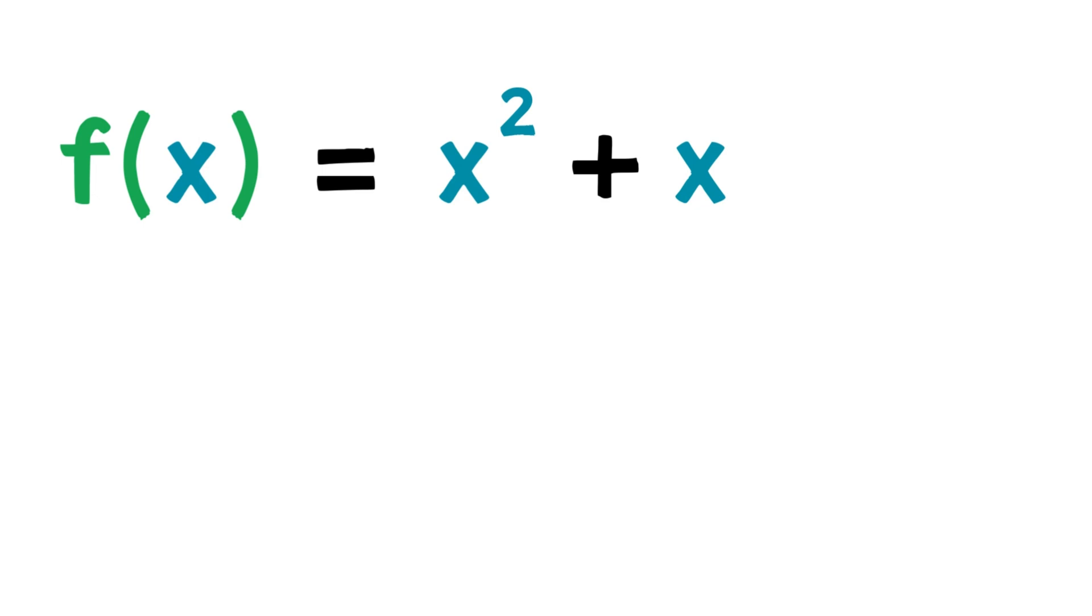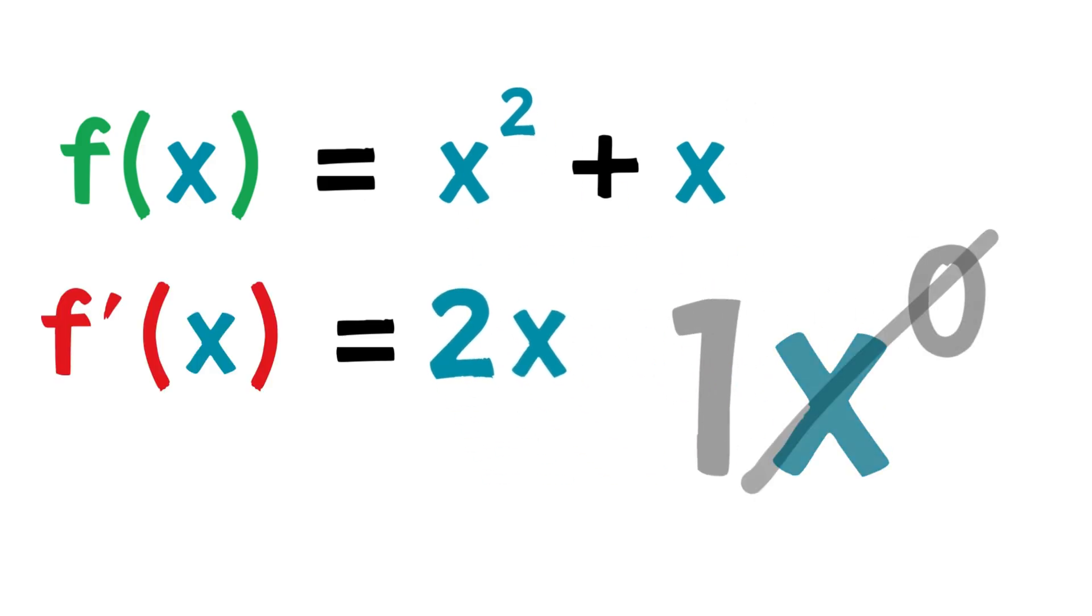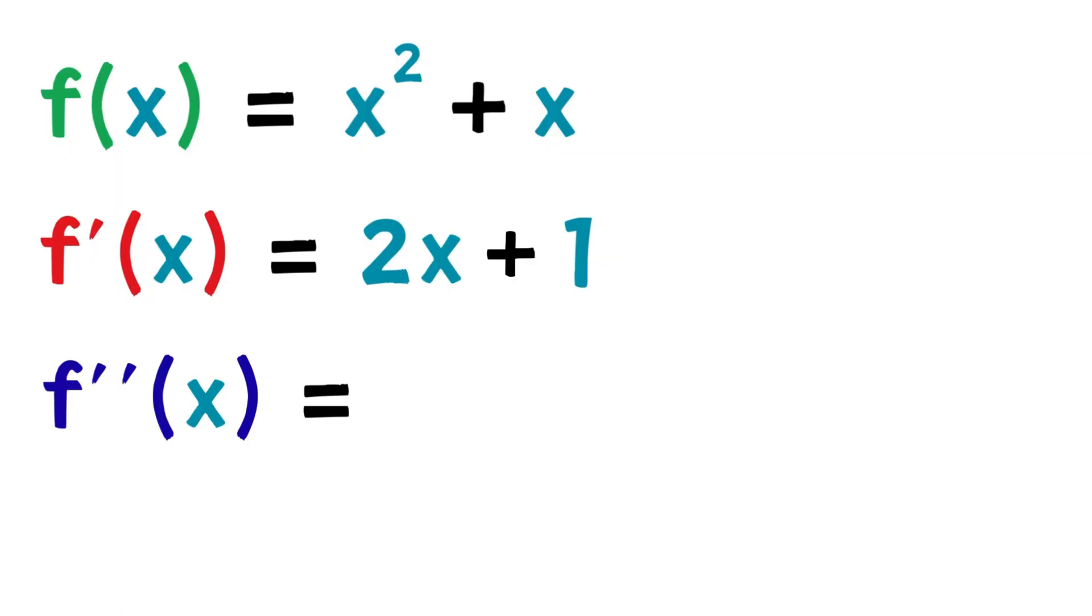Now, let's look at concavity in an example. Given the function x squared plus x, we know that the derivative is 2x plus 1. Now, to find the second derivative, we just take the derivative of the derivative. The derivative of 2x is 2, and the derivative of 1 is 0. So the second derivative of x squared plus x is 2.